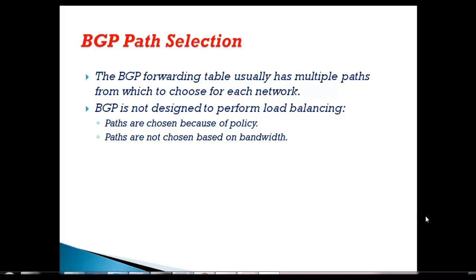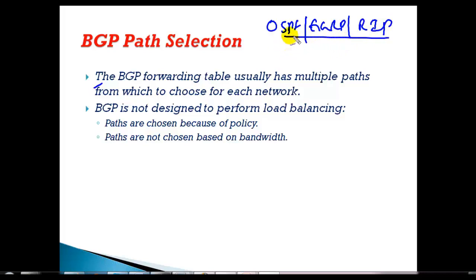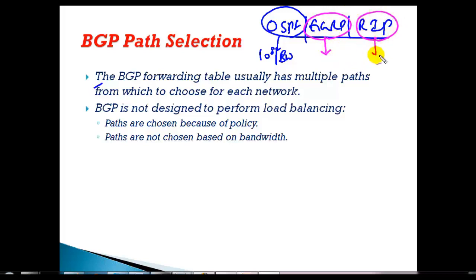In this video we'll see what is the path selection process in BGP. If you remember, we have seen some IGP protocols like OSPF, EIGRP, and RIP. Every routing protocol has its own best path manipulation. OSPF considers bandwidth, EIGRP sees bandwidth, delay, load, MTU, and reliability, whereas RIP counts hop counts. If two routes have equal metric or equal cost, they automatically do load balancing.